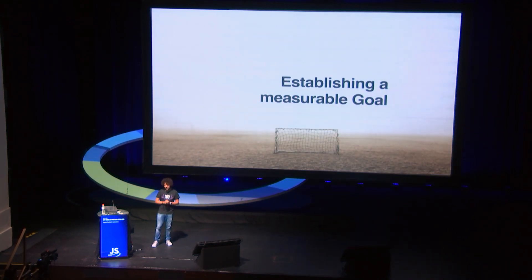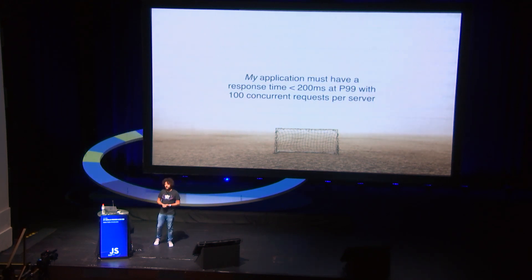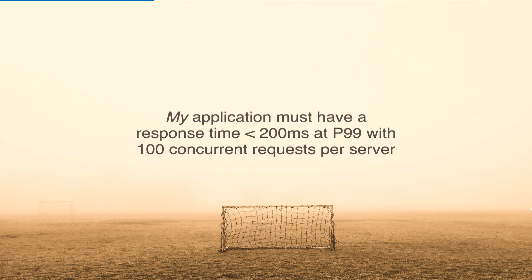How do we establish a measurable goal? Typically you can talk to your boss and get something concrete — how many concurrent users per service you want to achieve, what's the maximum latency you need to have. Those are very important numbers. Whatever it is, these are generic things you can take and use. Every application has its own business requirements.